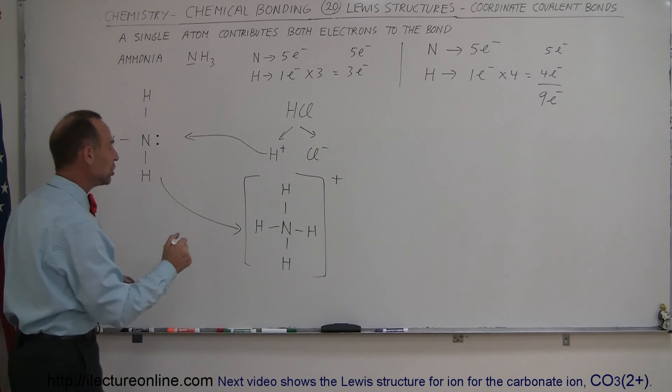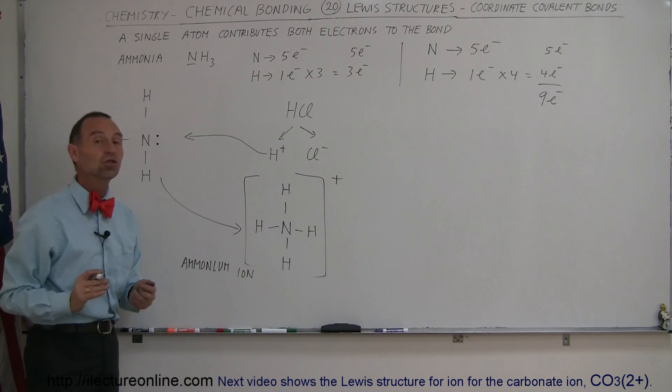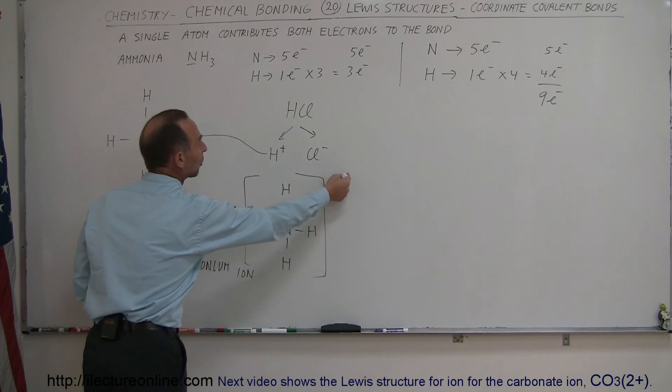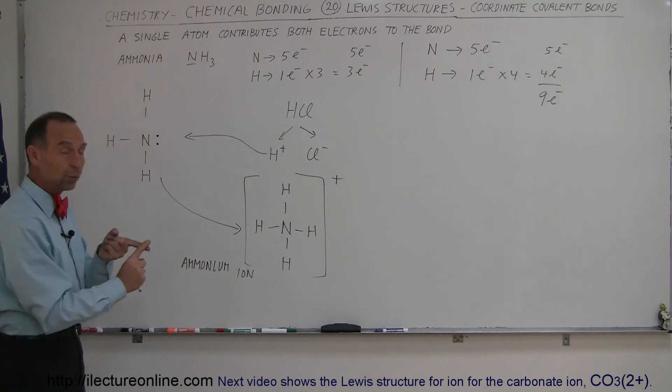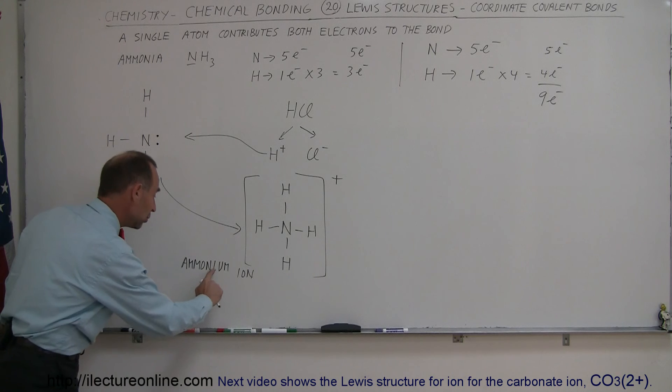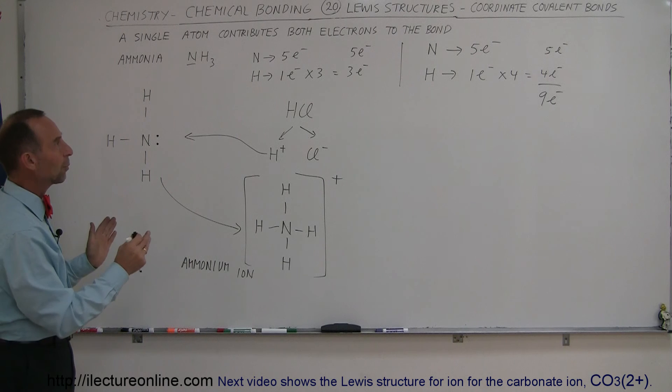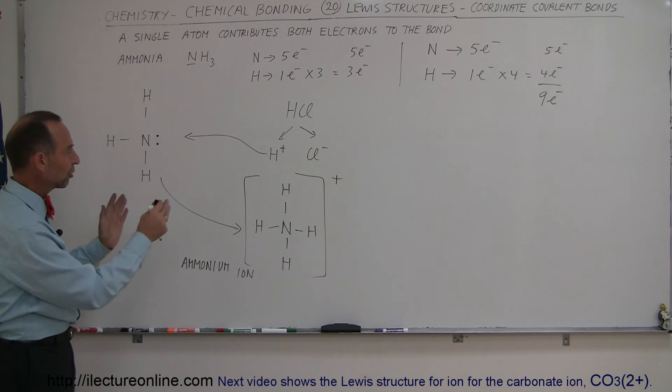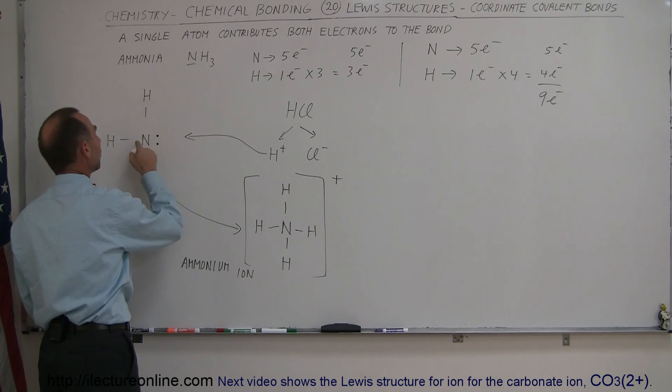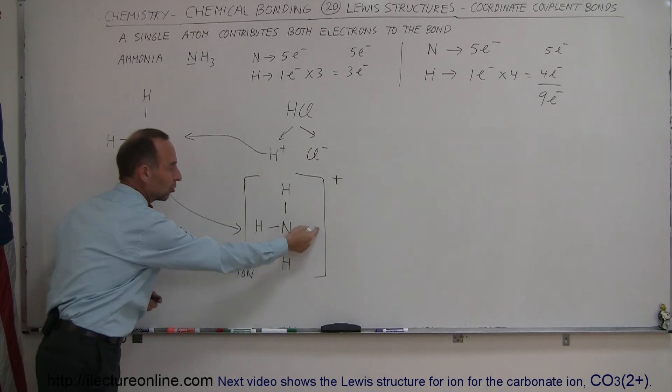So instead of ammonia, we now have ammonium ion, and so this is the proper Lewis structure. We put big brackets around it, indicating it's an ion, and then we put the charge on there. Other than that, the octet rule is followed, and we are missing electrons, so we do have the positive charge there. So that's how we draw a Lewis structure for this particular ion, and since in this case a bond was made where both electrons came from one atom and not from the other, we have what we call a coordinate covalent bond, which is right here.